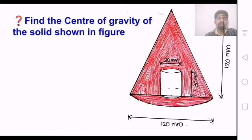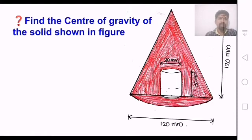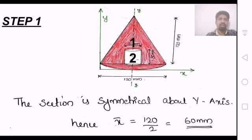Looking at the next figure: it has a conical portion and a cylindrical portion, with a hollow section. The hollow is the conical section. We then check the symmetry of this composite shape.